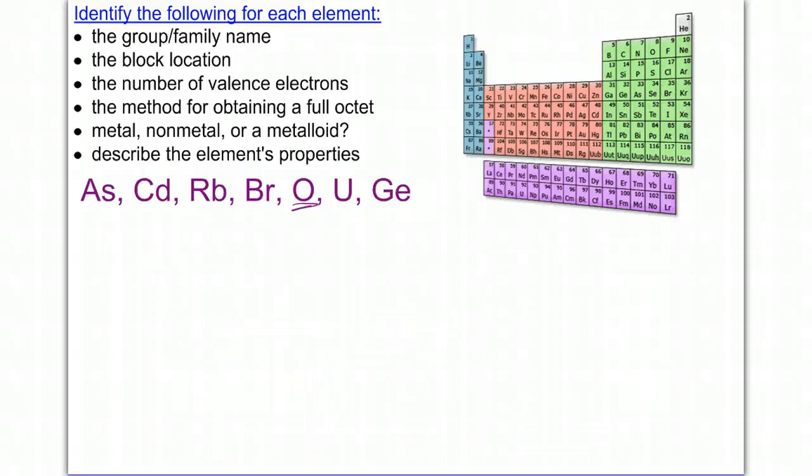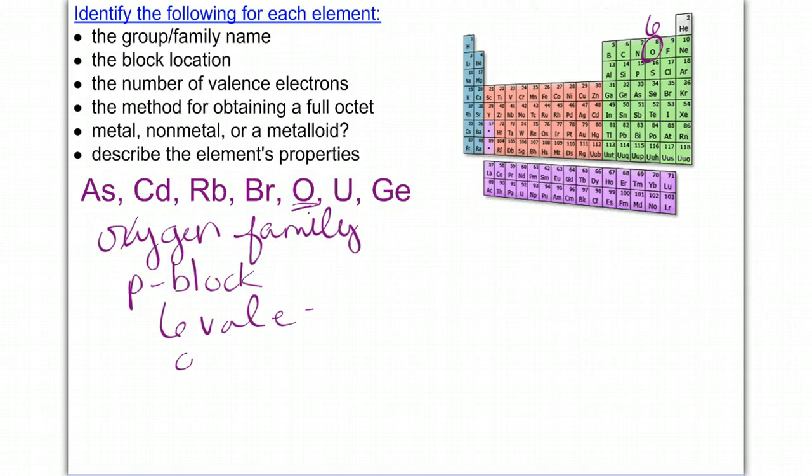Next is oxygen, and oxygen is here, element number eight, found in group number six. So it's in the group family, the oxygen family, which is convenient since we're dealing with oxygen. So we call it the oxygen family. It happens to be in the P block. It has six valence electrons, and so if it gains two, it will get a charge of negative two, and that's what will give it its octet.